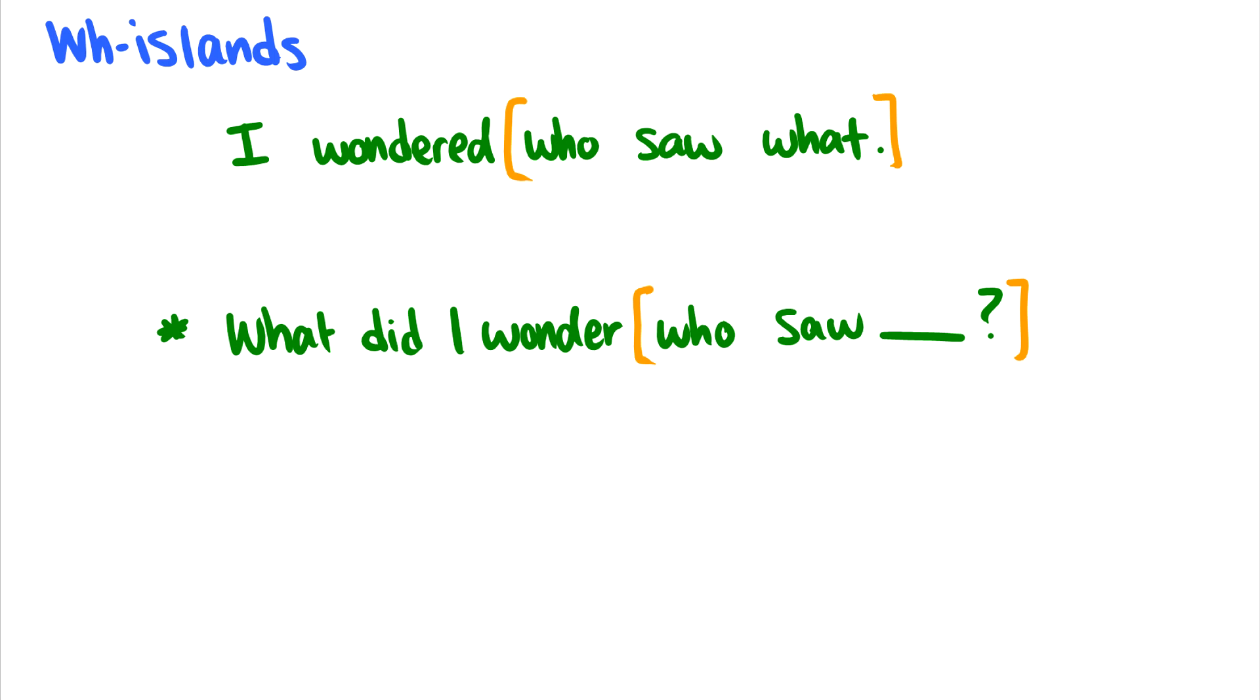The first one are wh-islands. So here's a grammatical sentence: I wondered who saw what. And I'm telling you that this 'who saw what' is an island. For instance, we can't pull out the what in the object position because then we'll get an ungrammatical string. What did I wonder who saw? Why is this?